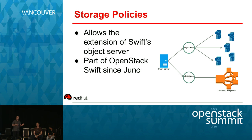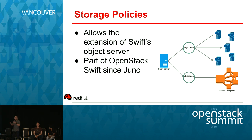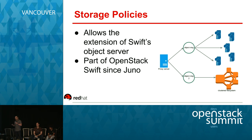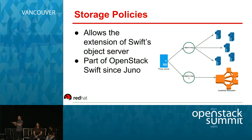Back in Juno, a new technology was added to Swift called storage policies. What that does is allow segregation of objects depending on the container. For example, if you want two-times or three-times replication, or objects on faster storage systems with SSDs — depending on the container, you can decide where to place the data.